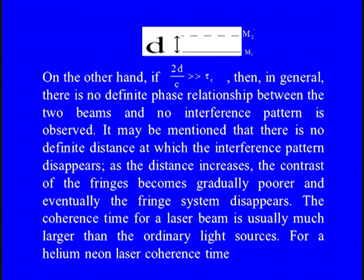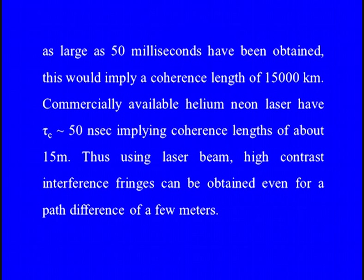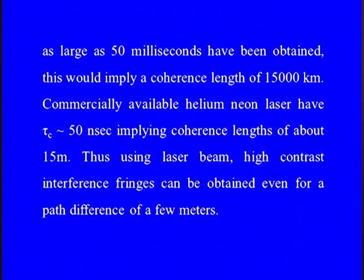The coherence time for a laser beam is usually much larger compared to ordinary light sources. For example, for a helium-neon laser, coherence times as large as 50 milliseconds have been obtained, implying a coherence length of 15,000 kilometers. Commercially available helium-neon lasers have coherence times of the order of 50 nanoseconds, meaning the coherence length is about 15 meters. Thus, using such a laser beam, high-contrast interference fringes can be obtained even for a path difference of a few meters.